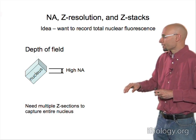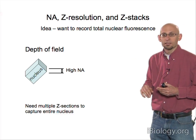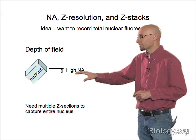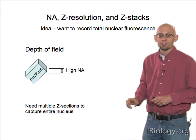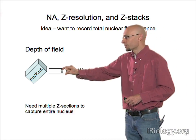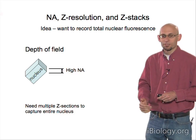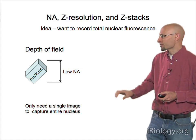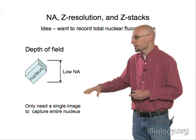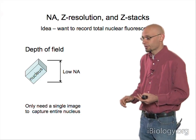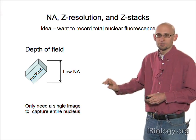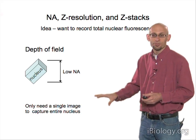For example, if you want to record total nuclear fluorescence to measure transcription factor abundance, a high NA objective gives just a thin band in focus at any one time — only a small chunk of the nucleus — so you'd need many Z sections. Switching to a low NA objective gives a much larger depth of field, capturing the whole nucleus in focus in a single section. The trade-off is lower light-gathering power and dimmer images, but if nuclear fluorescence is reasonably intense, this is a faster and more efficient approach.